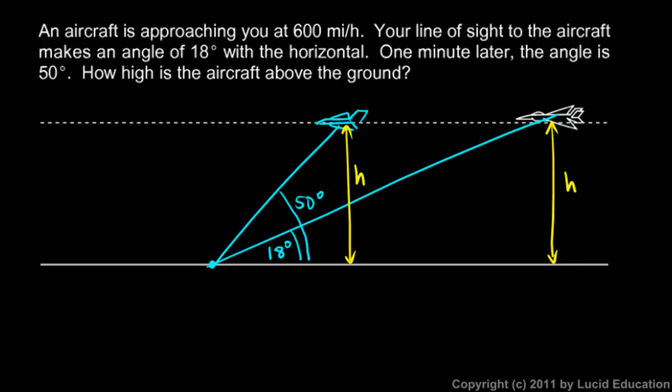And then a smaller right triangle over here, so that's a right angle also. In this triangle we have an 18 degree angle, and in this one we have a 50 degree angle, and we're trying to find the height. There's one other thing I need to realize in order to solve this problem.